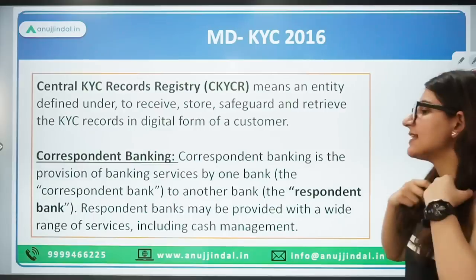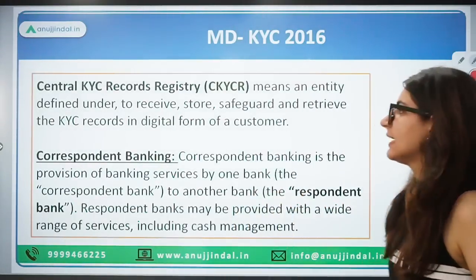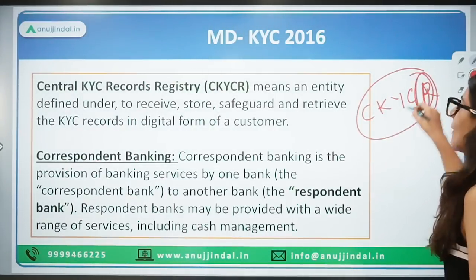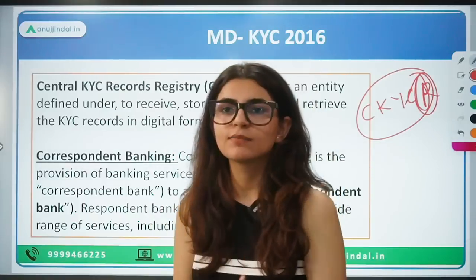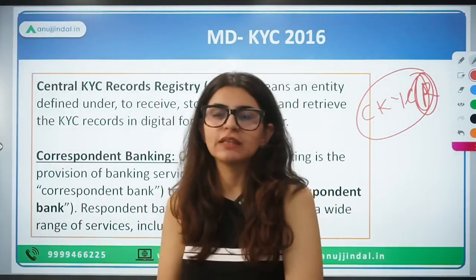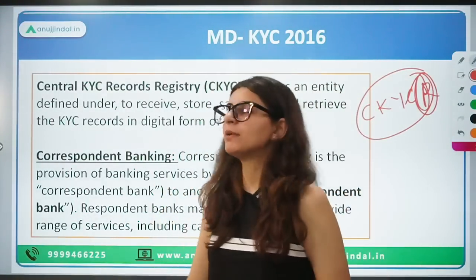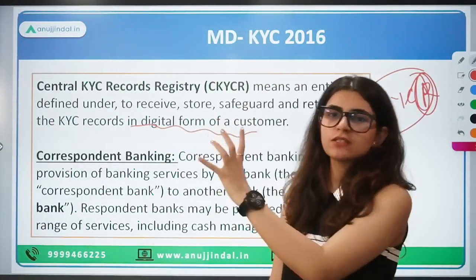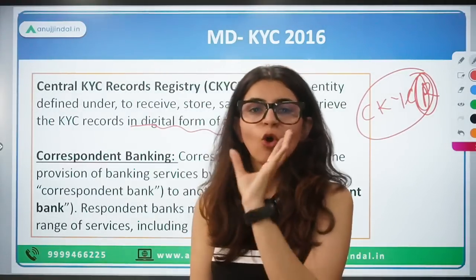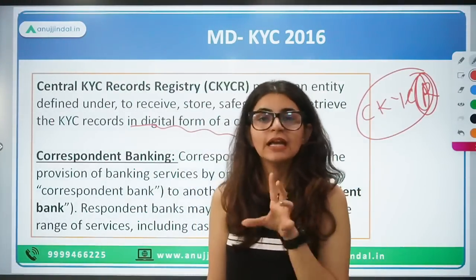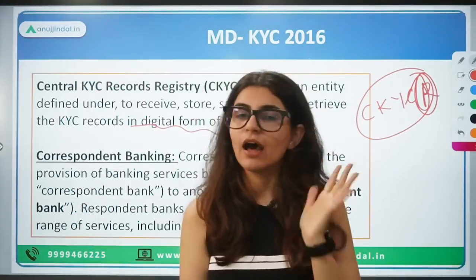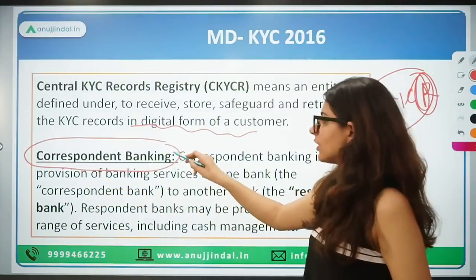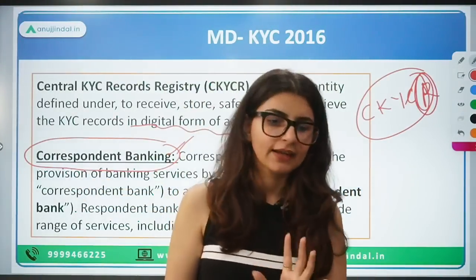The next definition is Central KYC Registry — CKYCR. It is a registry which maintains all your KYC documents. These KYC records are kept in a digital form in this Central KYC Registry. All documents are maintained or stored in digital form in the CKYCR.